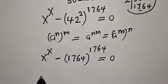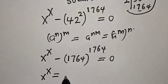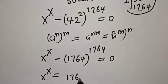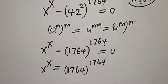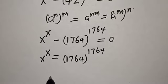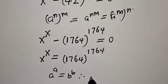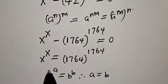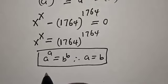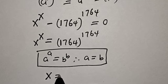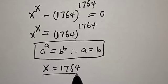Now X^X equals—let's take this to this side—1764 raised to power 1764. If you have a^a = b^b, therefore a = b. Then from this equation, X equals 1764. That is our final answer.